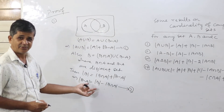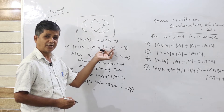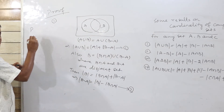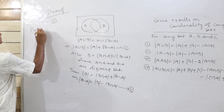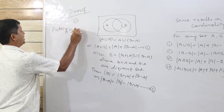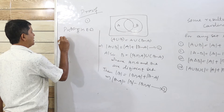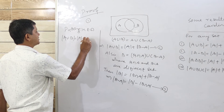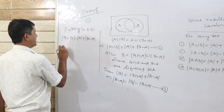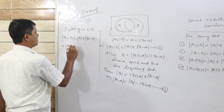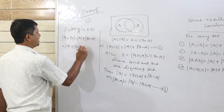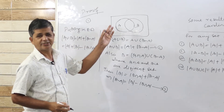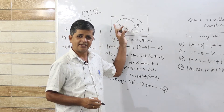Substituting equation 2 into equation 1: cardinality of A union B equals cardinality of A plus cardinality of B difference A, which equals cardinality of A plus cardinality of B minus cardinality of B intersection A.